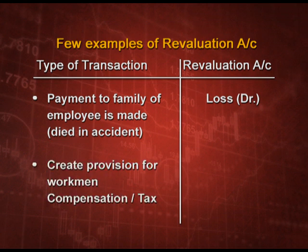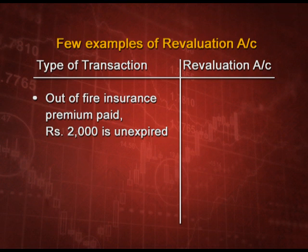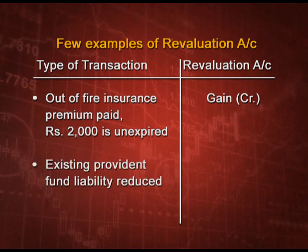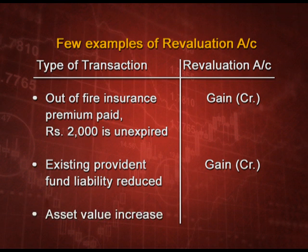If we have to create a provision for workman compensation or provision for tax, this is a loss - it will be debited in the revaluation account. If out of fire insurance premium paid, 2,000 is still unexpired, meaning prepaid, it is a gain - credit side. Similarly, if an existing provident fund liability is reduced, it is income that is a gain - credit side. And if the asset value is increasing, it is again a gain and will be credited.